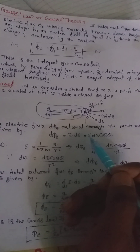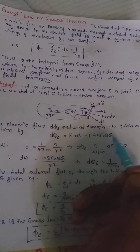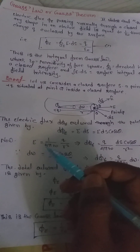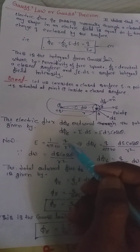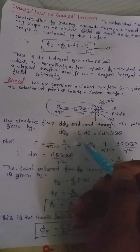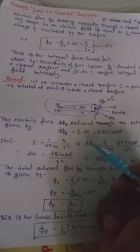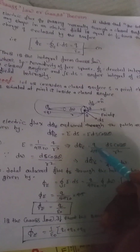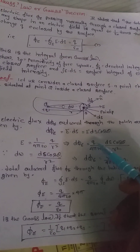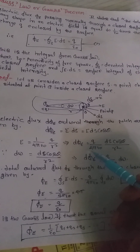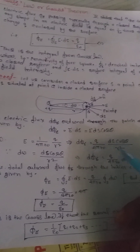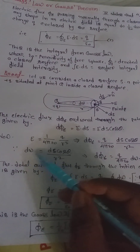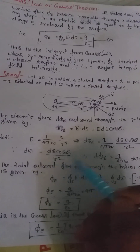This gives dΦ_E = E·dS·cosθ, where the electric field intensity E at distance r is E = (1/4πεₒ)·(q/r²). Substituting, dΦ_E = (q/4πεₒ)·(dS·cosθ/r²). Since the solid angle dω = dS·cosθ/r², we get dΦ_E = (q/4πεₒ)·dω.